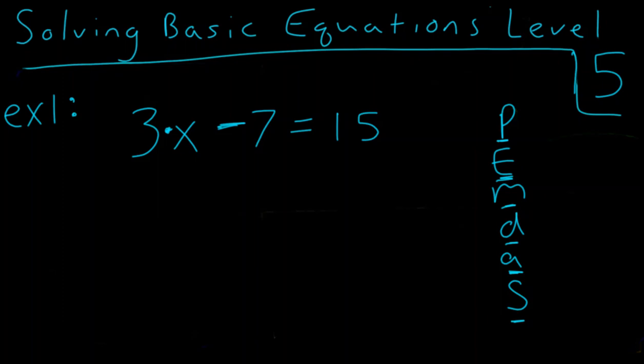And so what we want to do is we always want to draw this, and we want to say, okay, what things do we see? We see the 3x, which really means 3 times x, so I'll put a star by my M for multiplication. And I see the minus 7, so I know I have some subtraction.